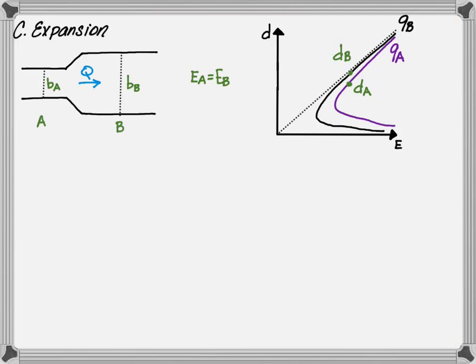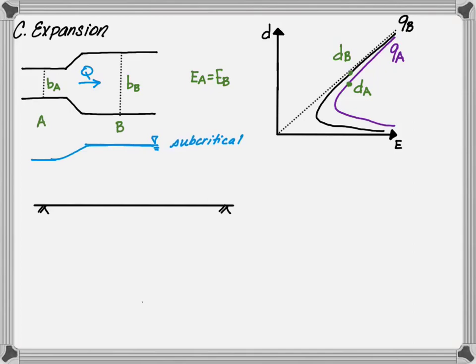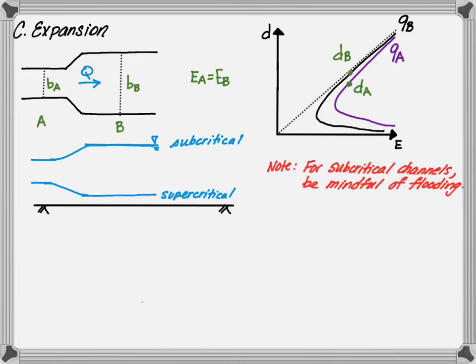A specific energy diagram is provided to show the depth of flow at point A and B, based on the fact that specific energy is constant through the expansion. The unit discharge at A is shown on the specific energy diagram as a purple line, while the unit discharge at B is shown as a black line. Since we're going through an expansion, the depth will increase as you move from point A to point B in subcritical channels. One needs to be very mindful of potential flooding. On the other hand, for a supercritical channel, the flow depth will decrease through the channel.